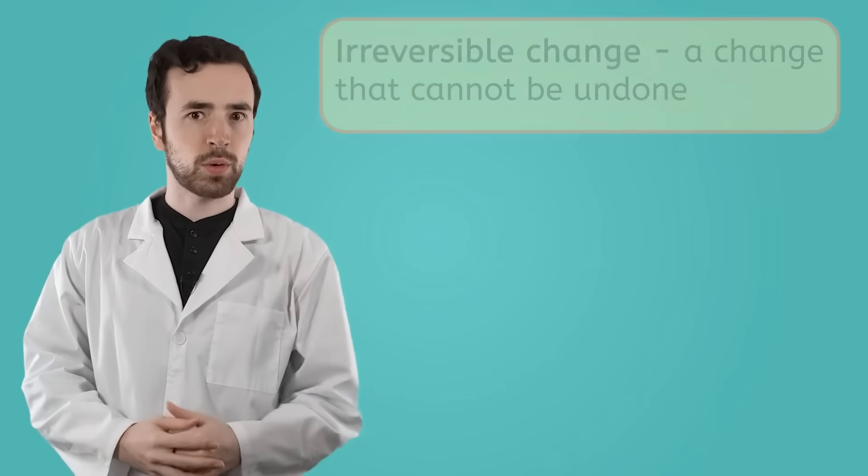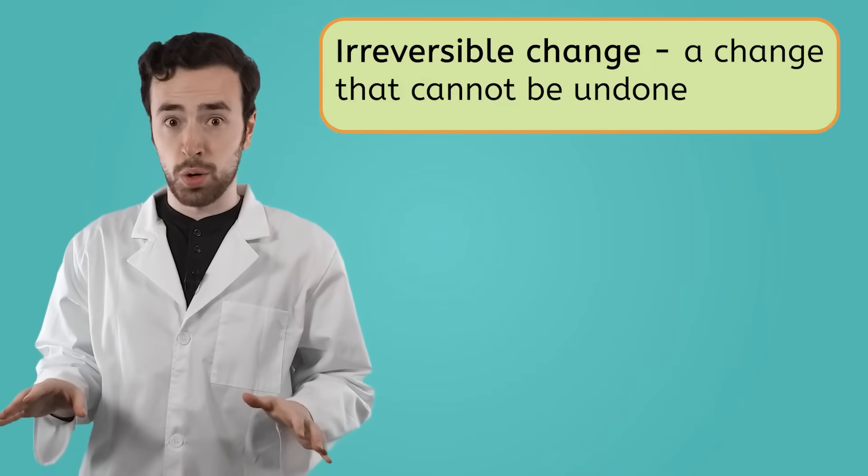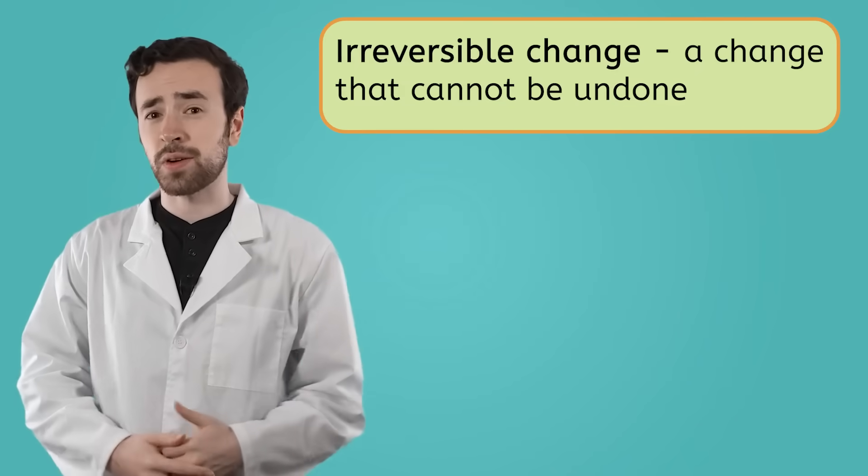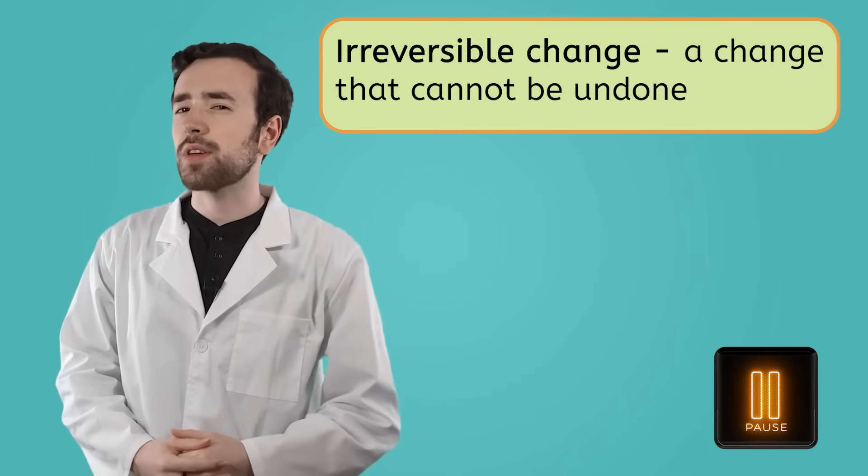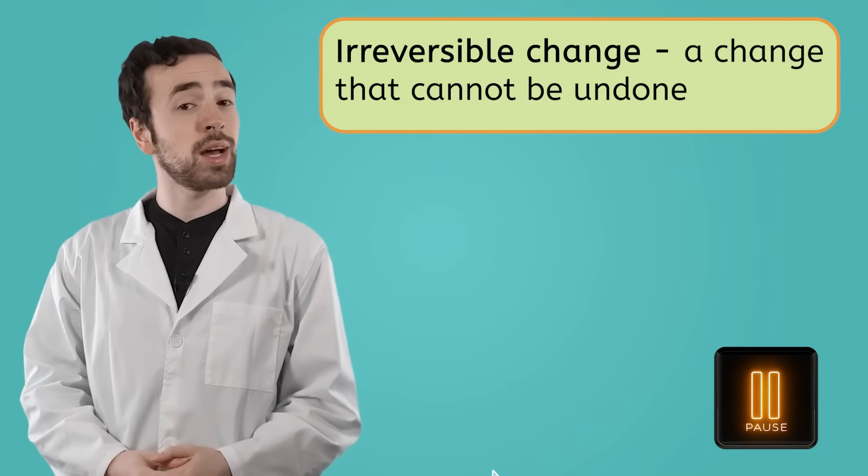Looking at rust, burning logs, and rotting fruit, you might begin to notice that all of these changes are irreversible. Once a chemical change happens, there is no going back. At least not very easily. Can you think of any other examples of chemical changes? Pause the video here and jot down some examples in your guided notes.